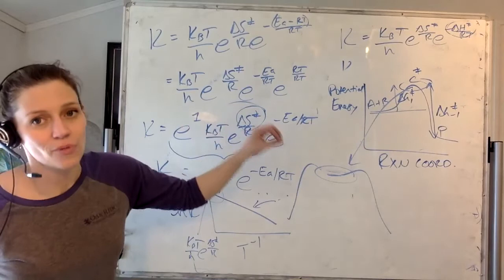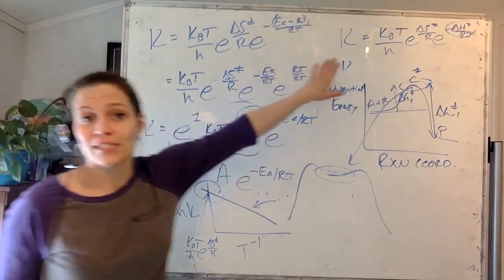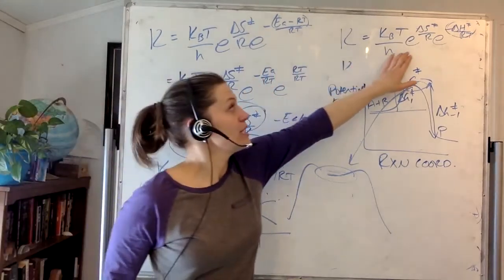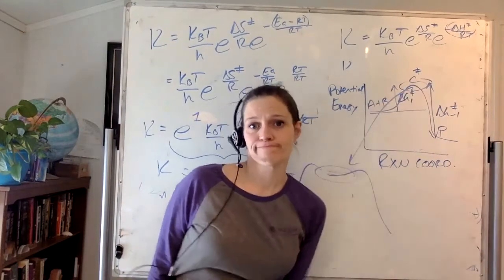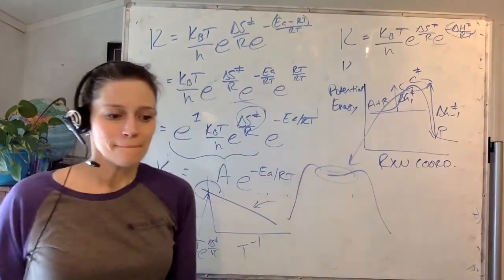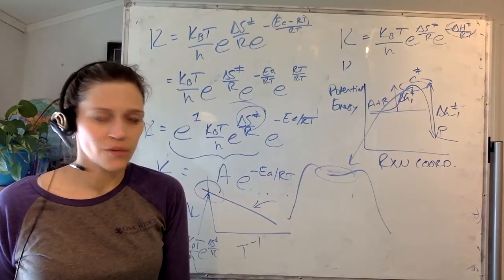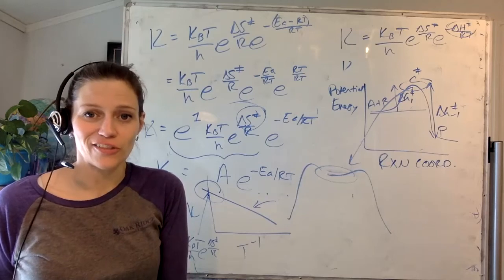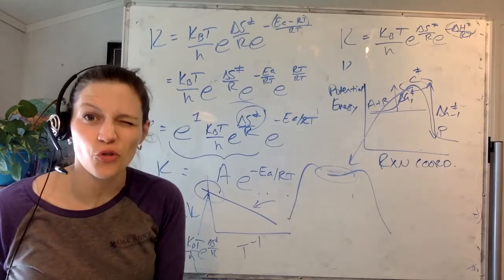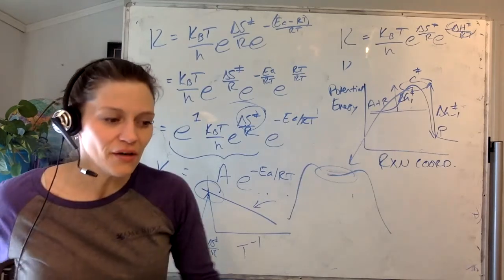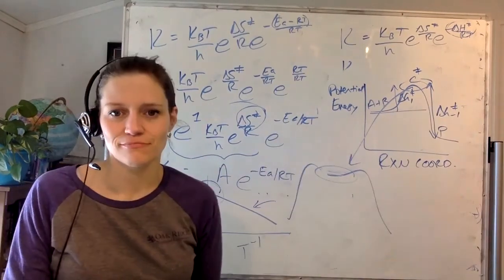To link your measured rate constants and temperatures to thermodynamic properties of your process, you need to dive deeper — to the entropy of activation and the enthalpy of activation. Transition state theory for the win. Email with questions.